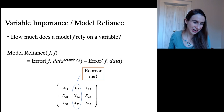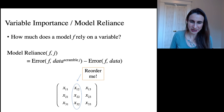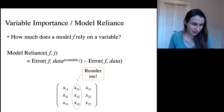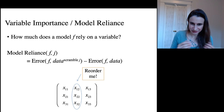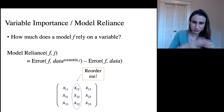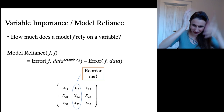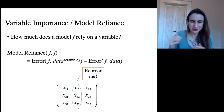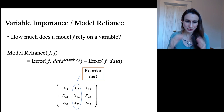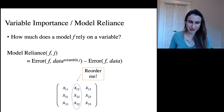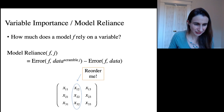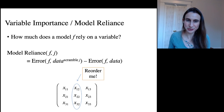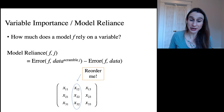The model reliance for model f and variable j is computed as the error when you scramble the data — when you mess up that variable — minus the error when you kept the data exactly as it was. The larger the model reliance is, the more the model depends on that variable.